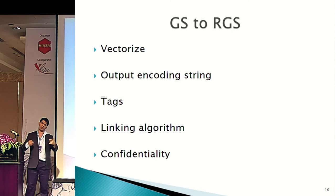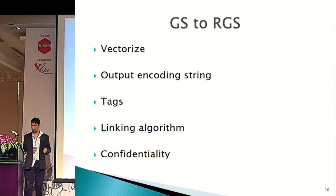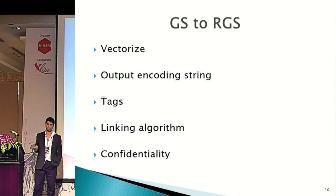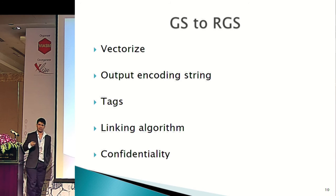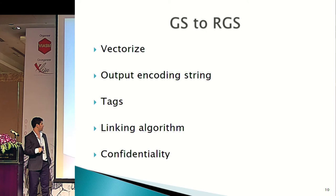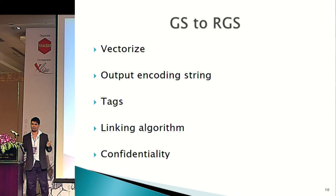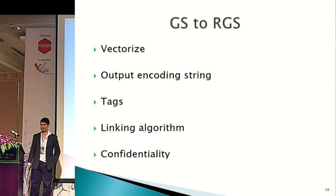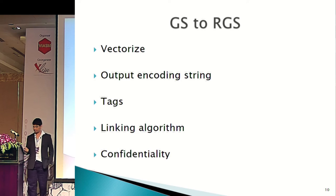We'll have output encoding strings — ways to say how outputs are actually encoded — and this will allow us to do things. Then we have tags, which is a way of saying which functions we garble and what they garble to. Tags are identifiers or names of functions. Then we have a linking algorithm, which says how we can combine two garbled functions together. And of course, we need a new notion of security called confidentiality.